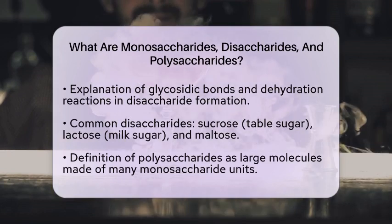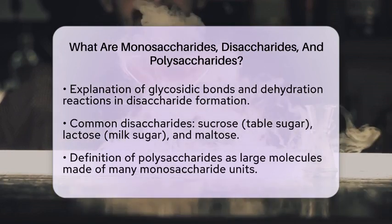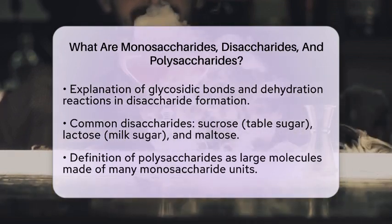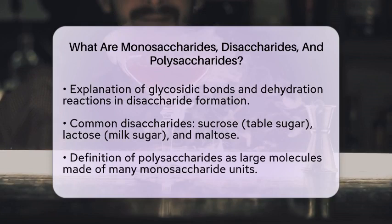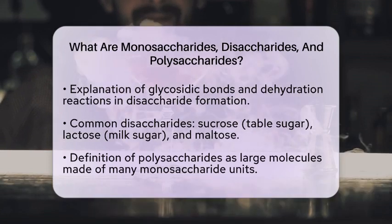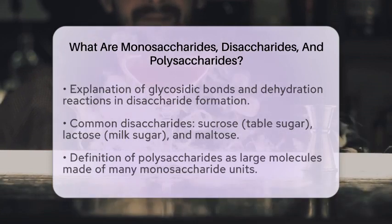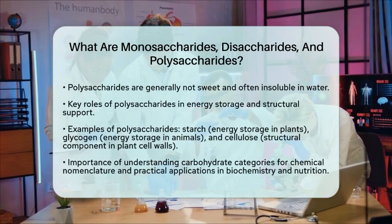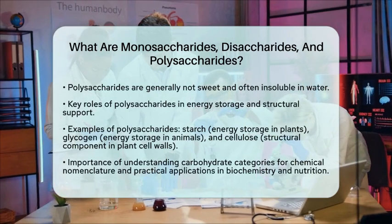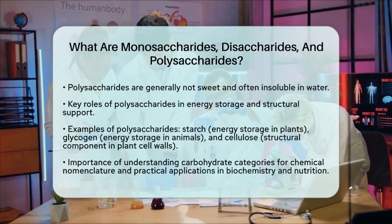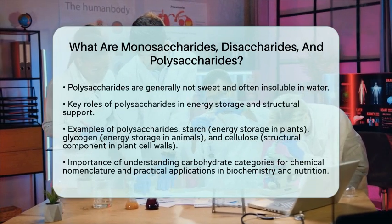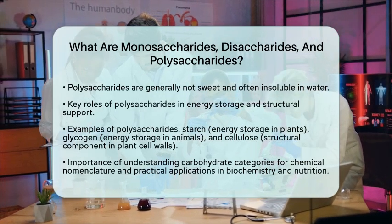Key examples of polysaccharides include starch and glycogen. Starch is used for energy storage in plants, while glycogen serves the same purpose in animals. Cellulose is another polysaccharide, and it is a structural component of plant cell walls.